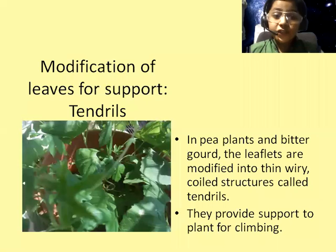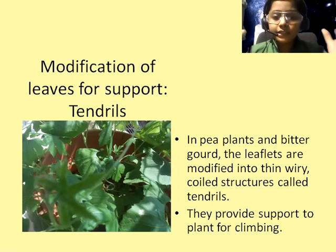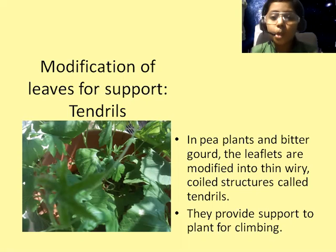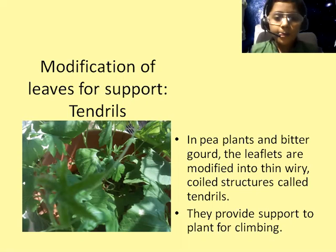Modifications of leaf for support: in pea plants, the leaflets are modified into thin, wiry, coiled structures called tendrils. They provide support for the plant for climbing.